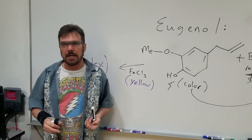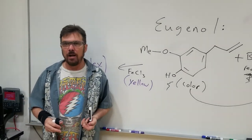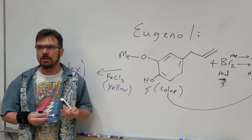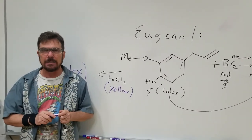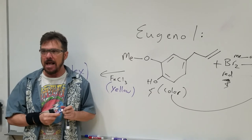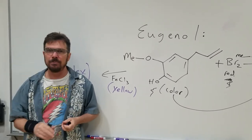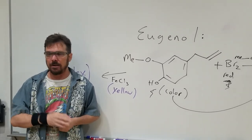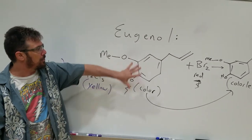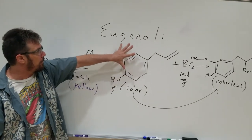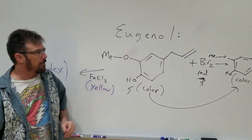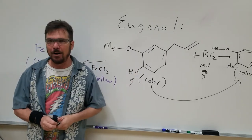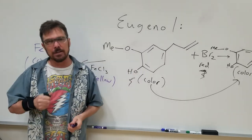Those will be the chemical tests we run to verify what we have. So let's get to work, set up our apparati out in the lab, start distilling, isolating our eugenol from the cloves, and then do the extraction to get it away from the water.